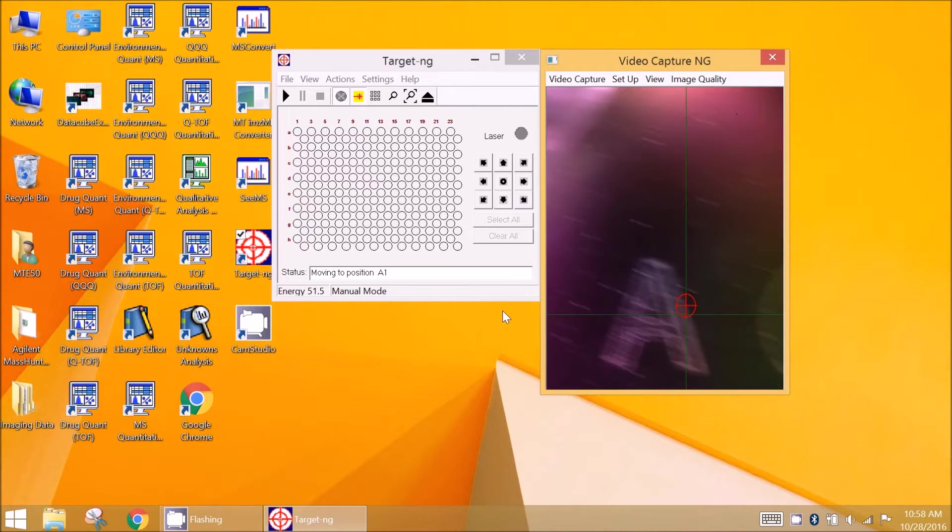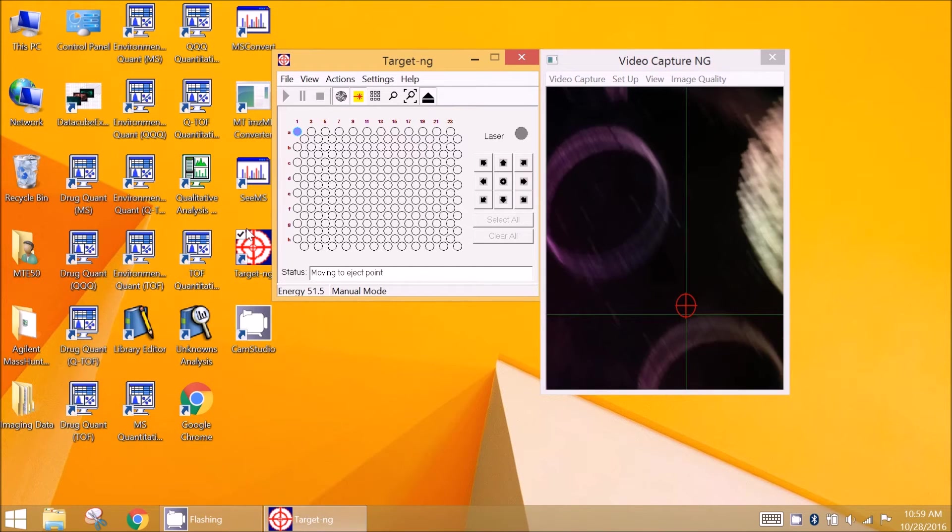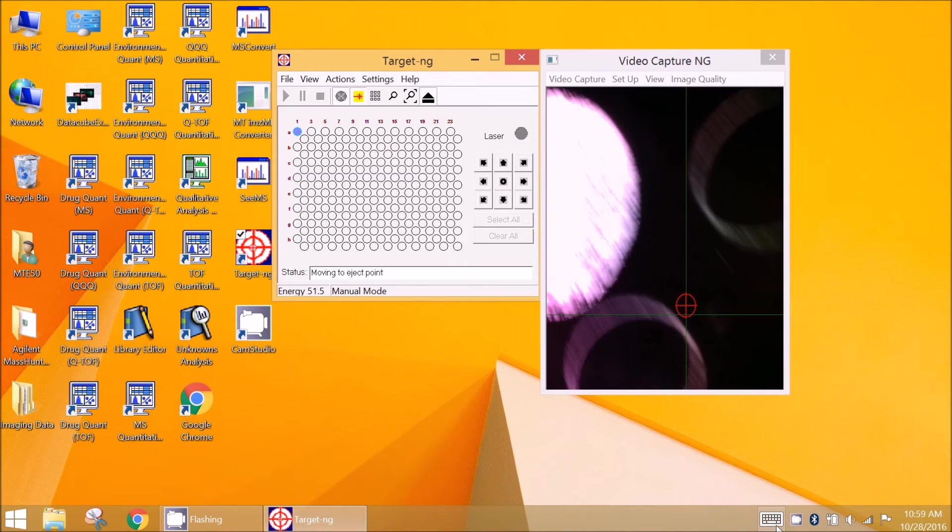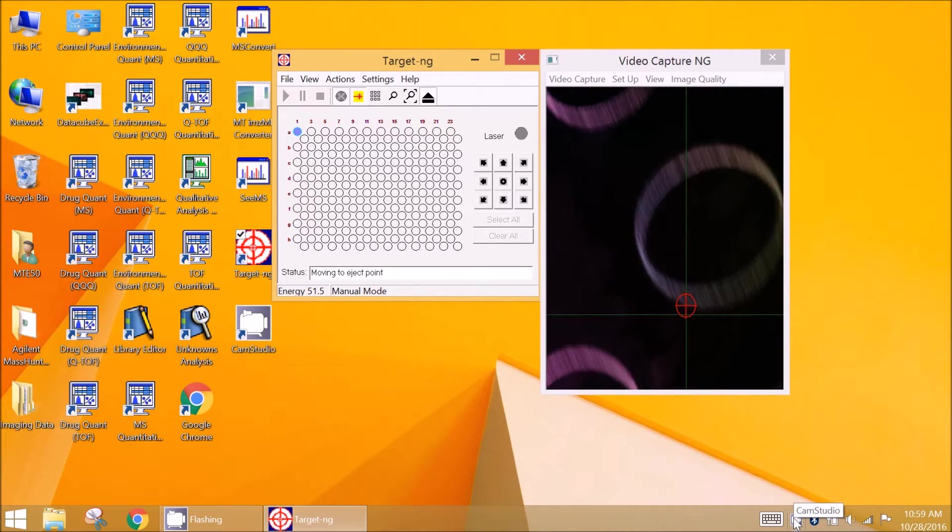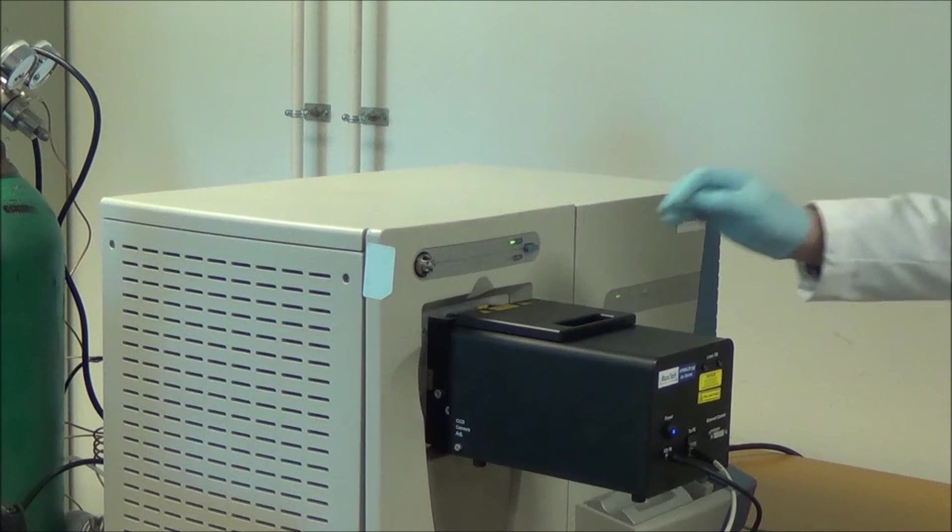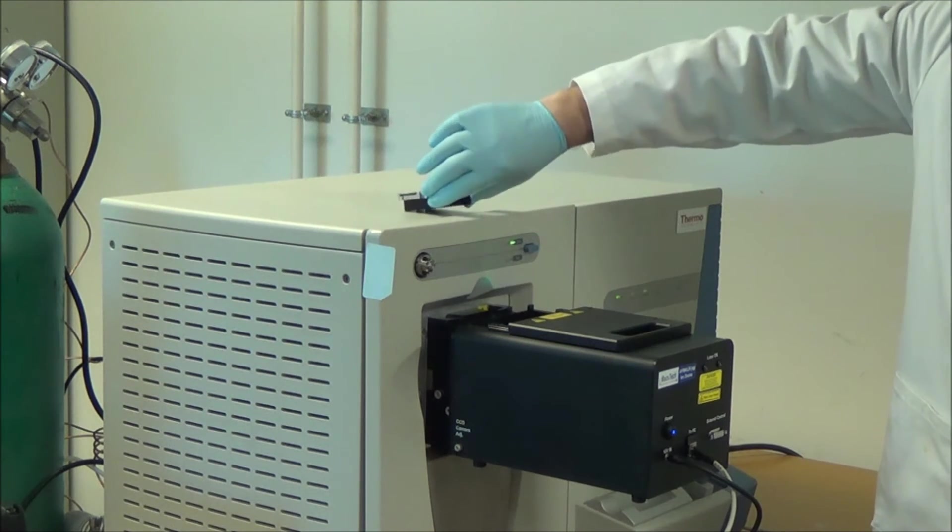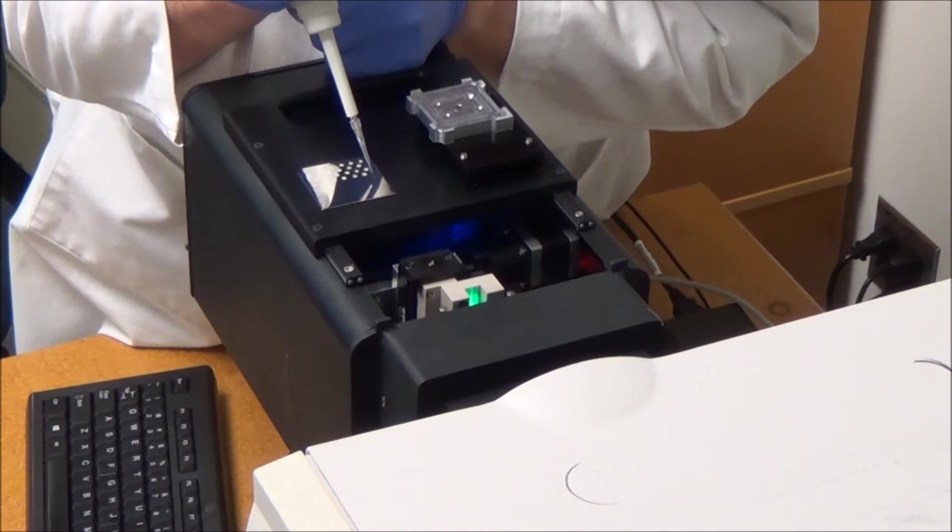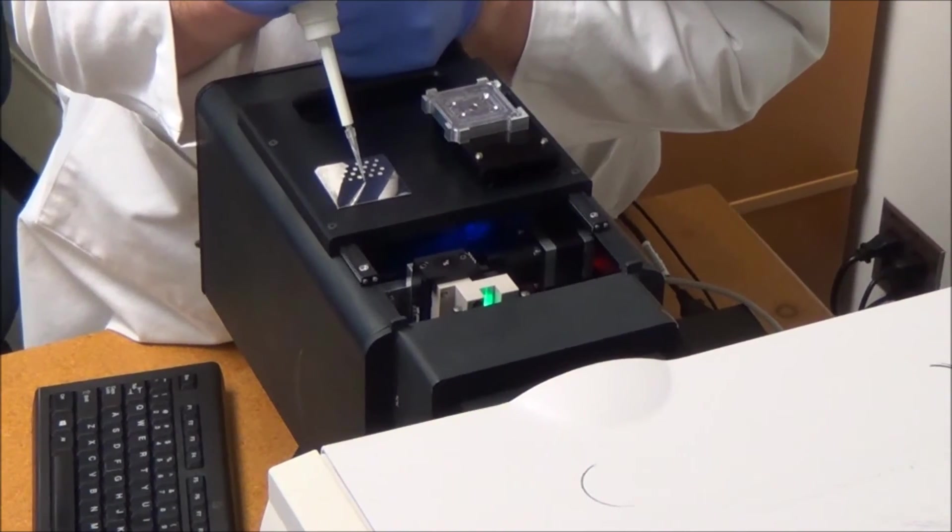To replace the sample, put the XY stage into the ejection position. The sample holder can be removed after opening the top door of the source. After sample preparation, the MALDI target plate is installed into the source in the backward order.